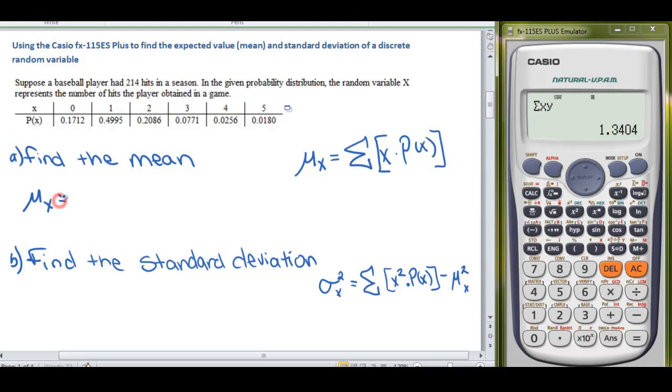So our expected value, our mean, equals 1.3404. That means we're expecting him to get 1.3404 hits per game on average. Over the course of 10 games, we expect him to get between 13 and 14 hits. Over 100 games, we would expect him to have 134 hits, and so on and so forth.